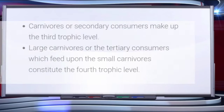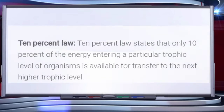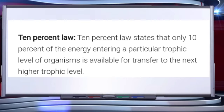Carnivores or secondary consumers make up the third trophic level. Similarly, the large carnivores or tertiary consumers, which feed upon the small carnivores, constitute the fourth trophic level. Now we will discuss the 10 percent law — it's very important, please try to understand it carefully.